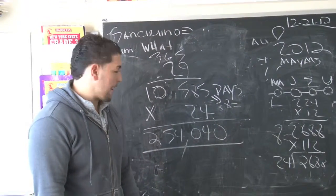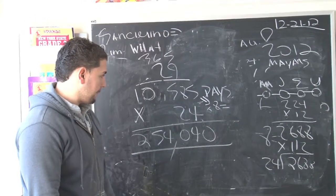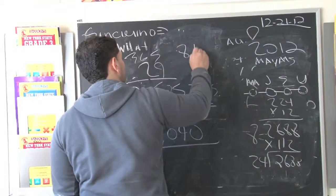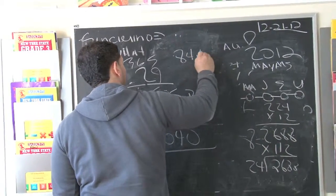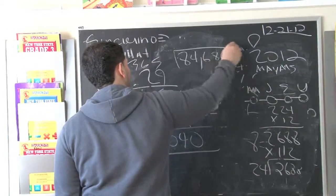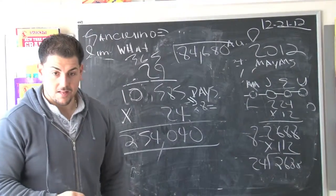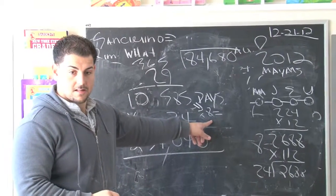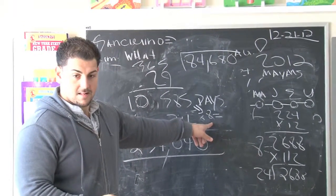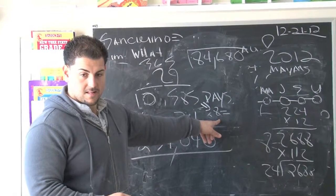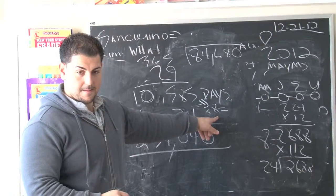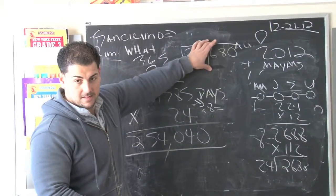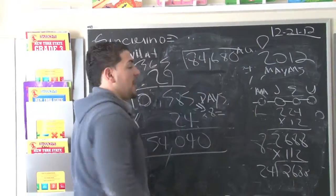10,585 times 8. What do you got? 84,680. Okay, 84,000. 600. 80. Really? I got 672. What do you got? So, 10,585 times 8. All right, so now. This is how many hours I've been asleep, right? Okay, so what are we going to divide this by? 365 or 24?